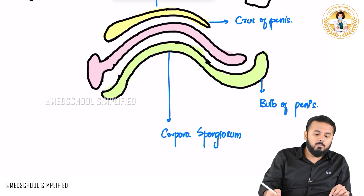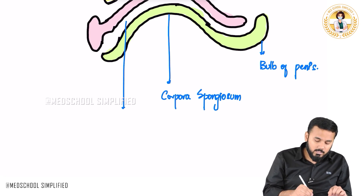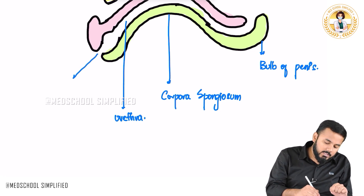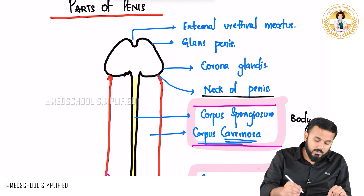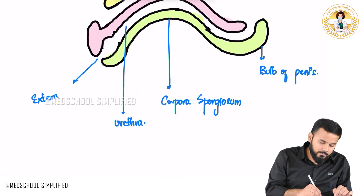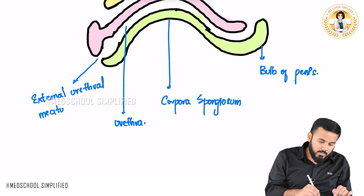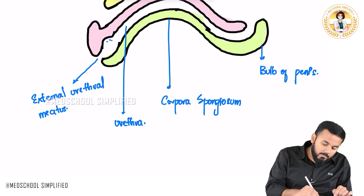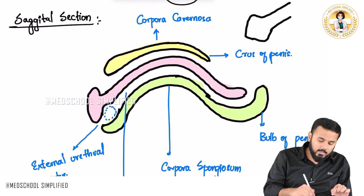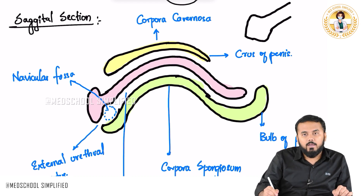The center opening is called the urethra. The wide opening which you can see here is called the external urethral meatus. The oval gap you can see in the center is called the navicular fossa. So in the sagittal section you can identify the navicular fossa, external urethral meatus, corpora cavernosa, and corpus spongiosum.